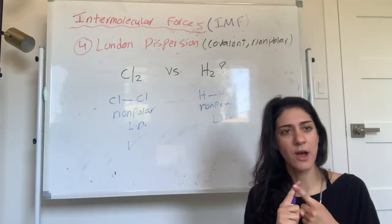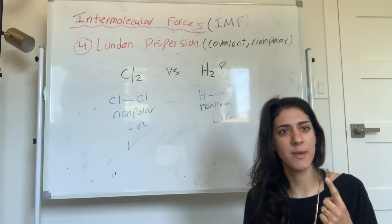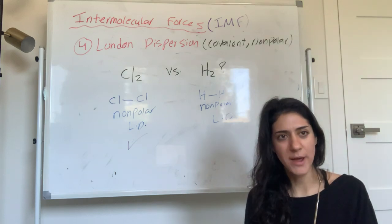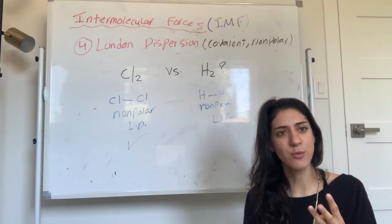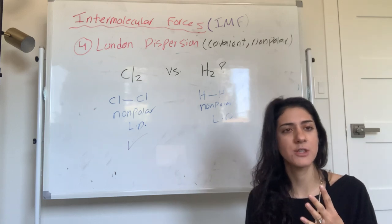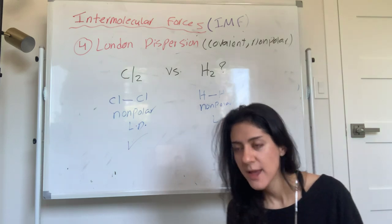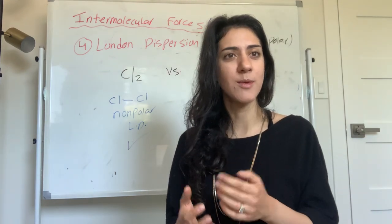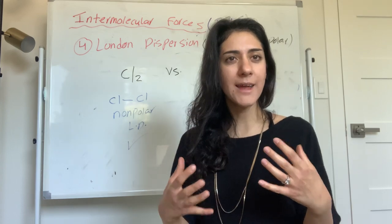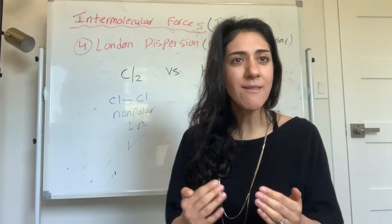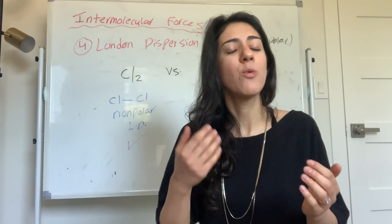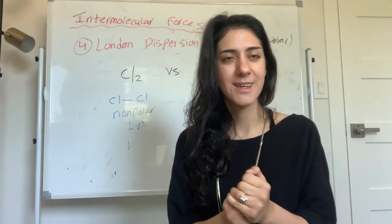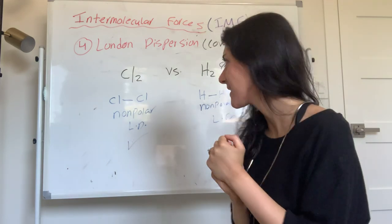We've gone over ionic — the strongest IMF — then hydrogen bonding, which requires H–N, H–O, or H–F; then dipole-dipole, which is covalent and polar; and London dispersion, which is covalent and non-polar. Next up, we're going to do a lot of practice problems to show you how to decide what type of IMF a substance has and how to predict physical properties using IMF. Nice job — see you next time!